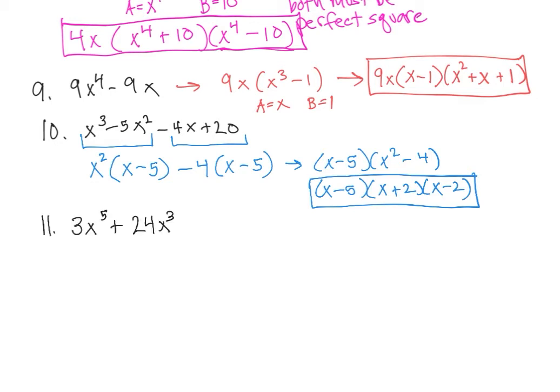So that's 10. Let's look at 11. Let's try to find a common factor between 3x to the 5th and 24x cubed. It's x squared — so we're going to factor out a 3 and an x squared. That would leave us with x cubed plus 8.